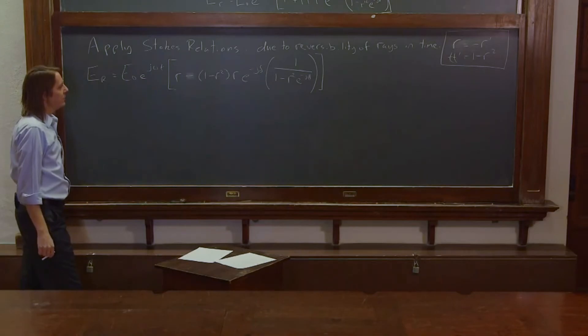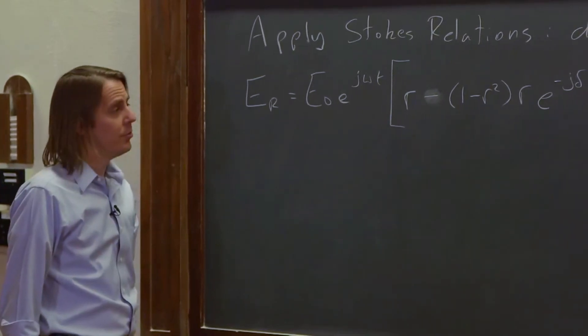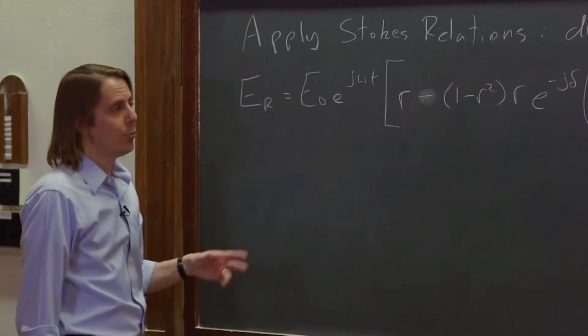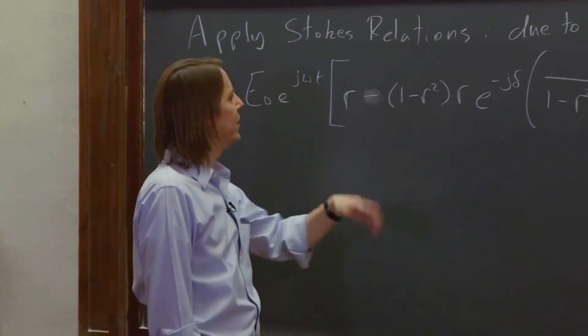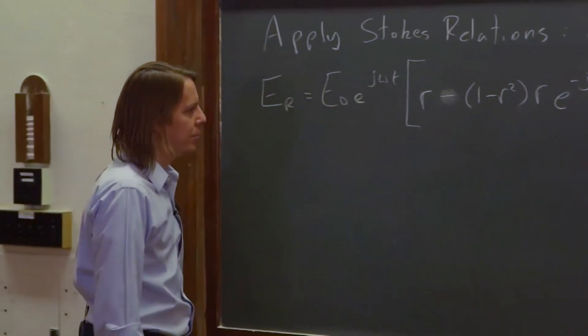So Stokes got us down to having everything just in terms of little r. No r primes, no t's, no t primes. Here's everything in terms of that first reflection coefficient.